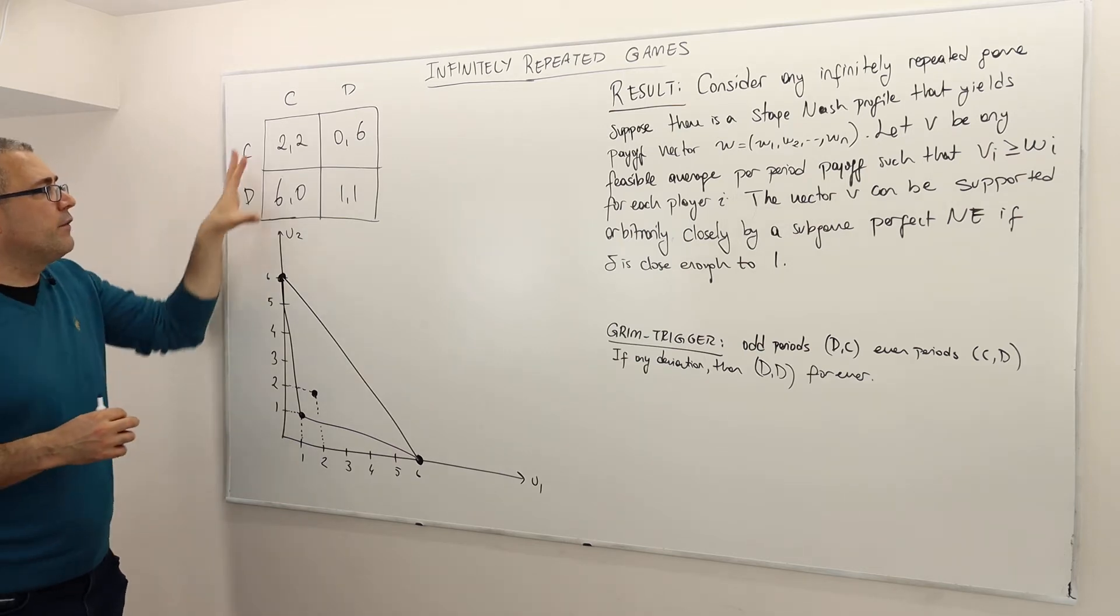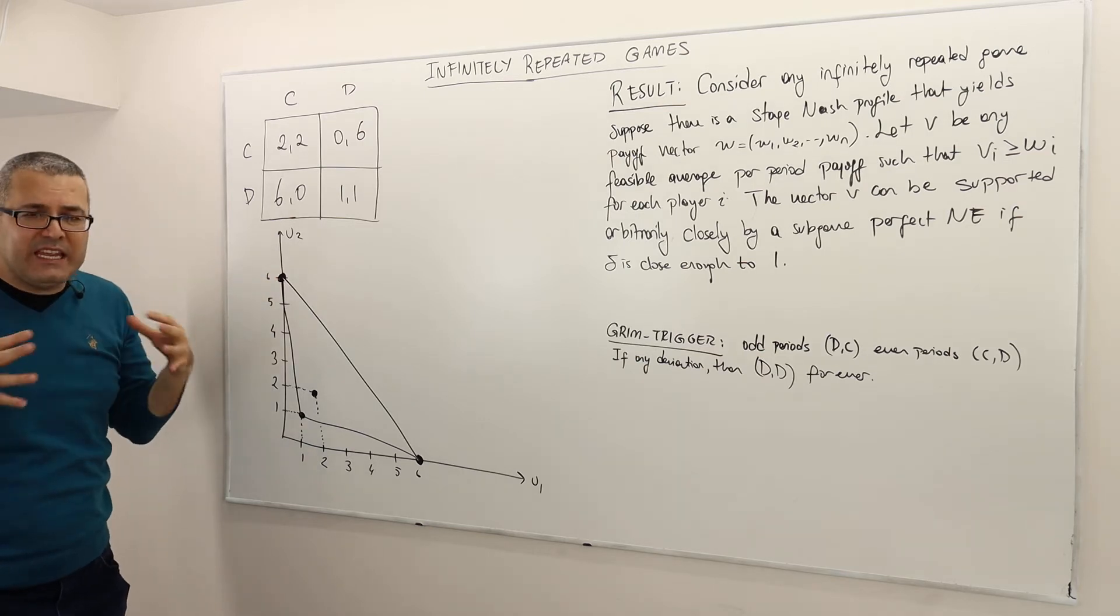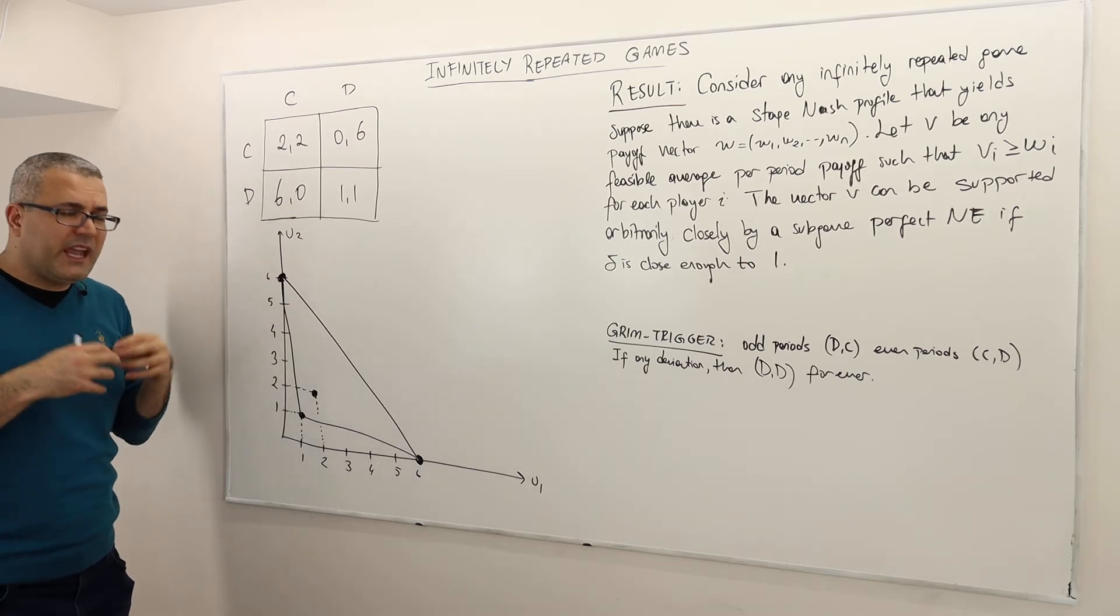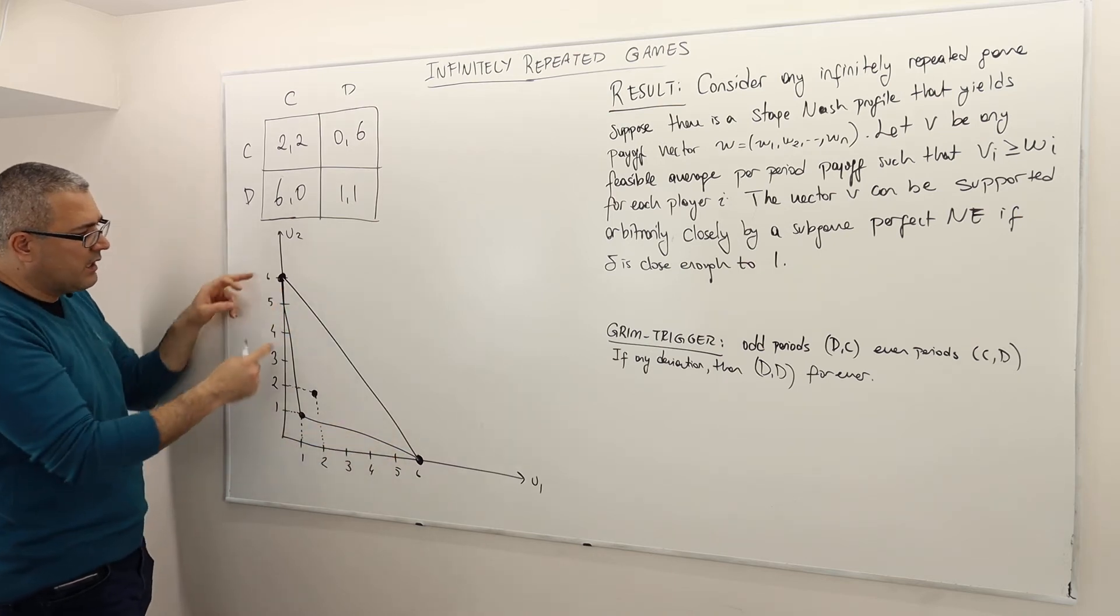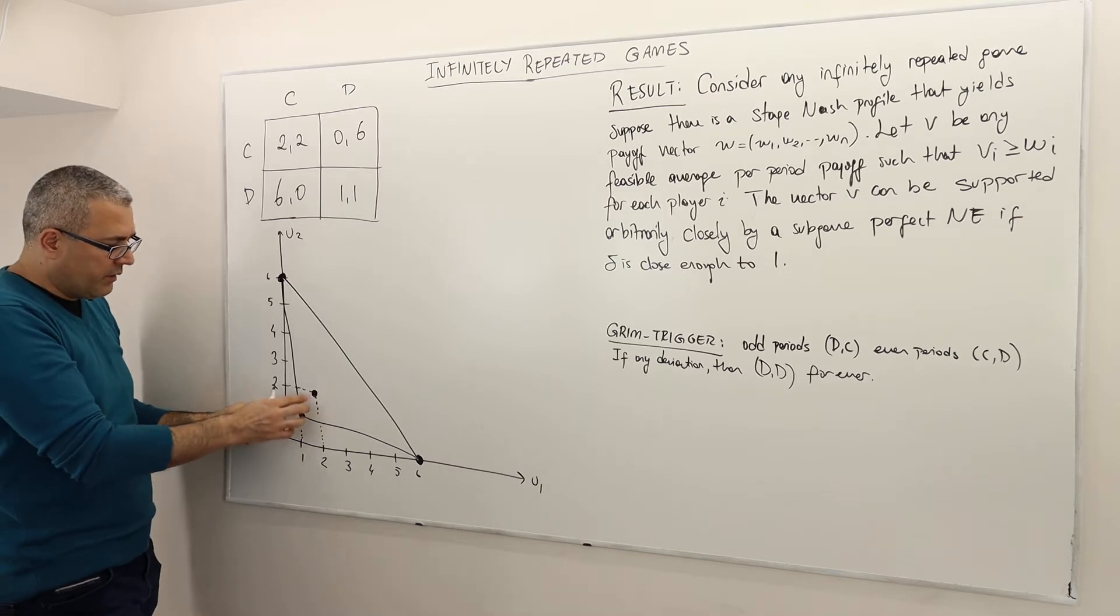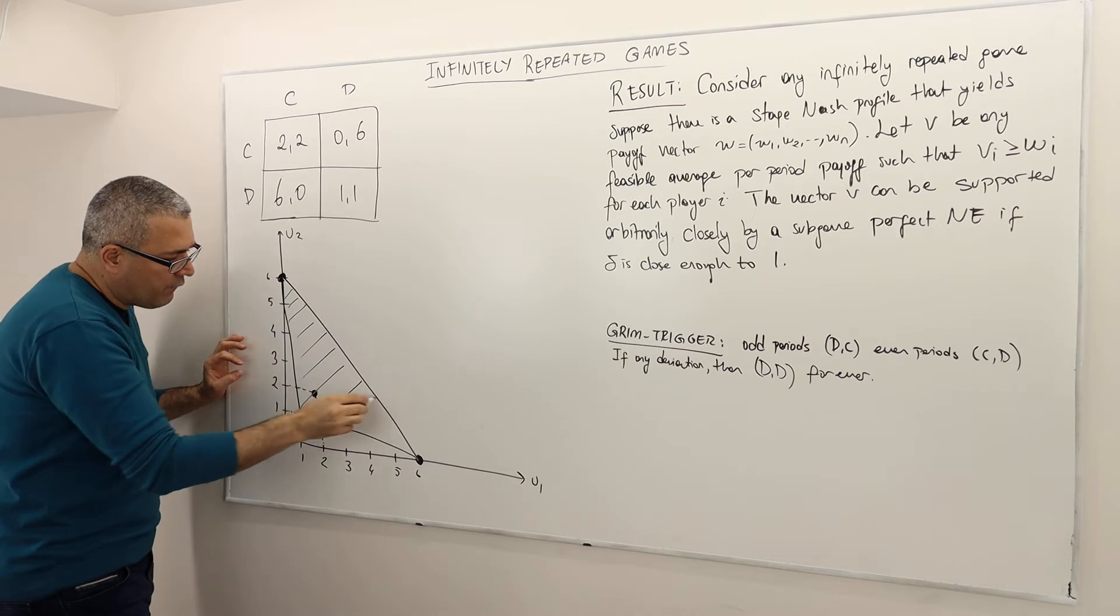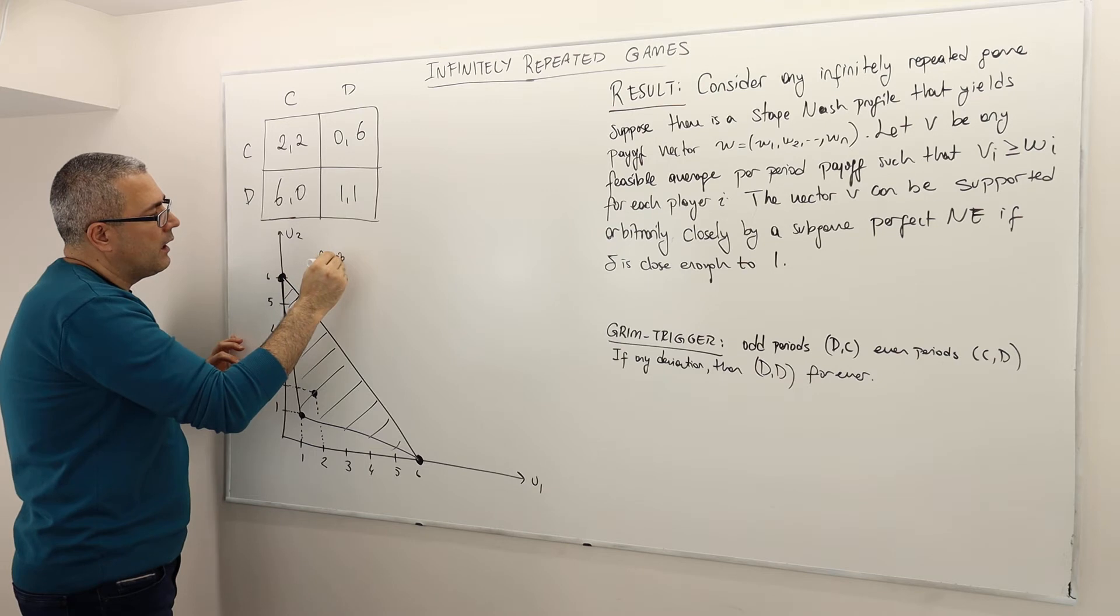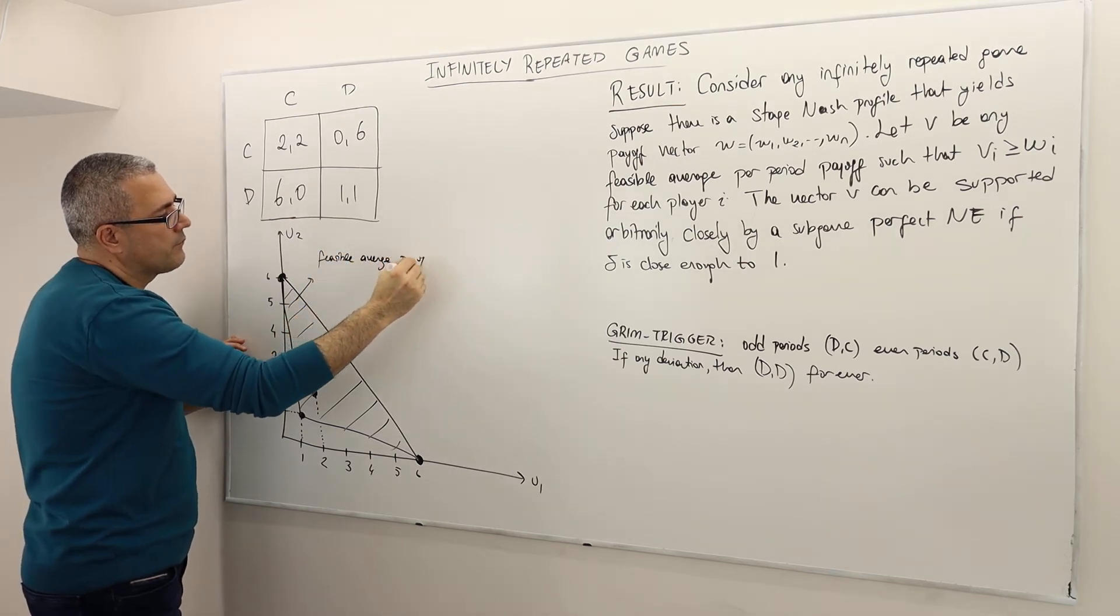So these four dots are basically the payoffs that can be achieved in this game. So what about the average payoff in this game? So the feasible average payoff is going to be any convex combination of those four vectors. Well, any convex combination of these four vectors is basically this triangle, starting from 0,6 and 6,0 and 1,1, alright? So 2-2 is in this. So this triangle is basically the set of feasible average payoffs.